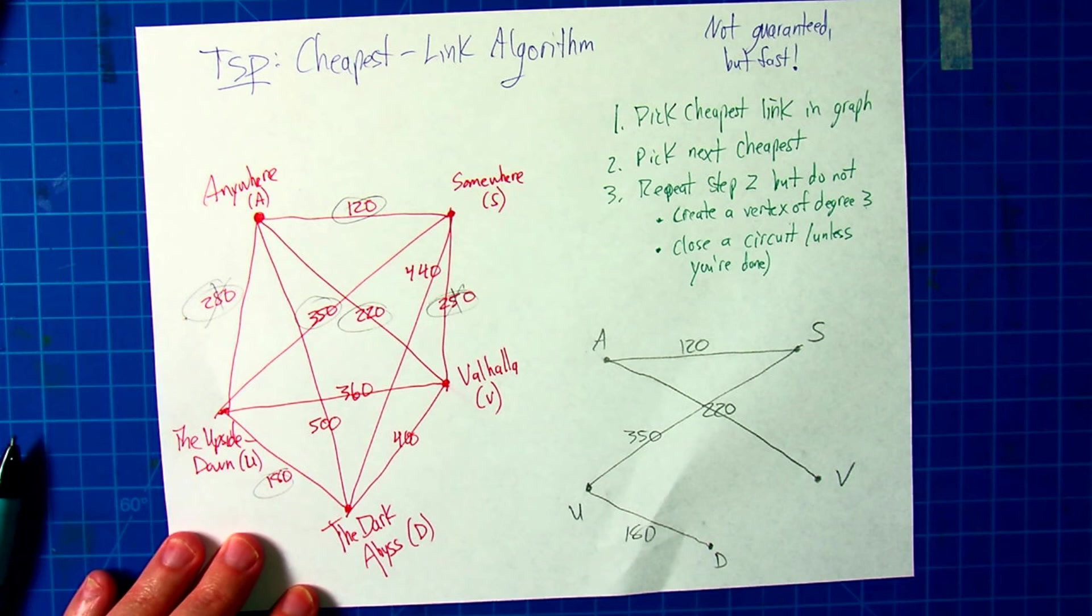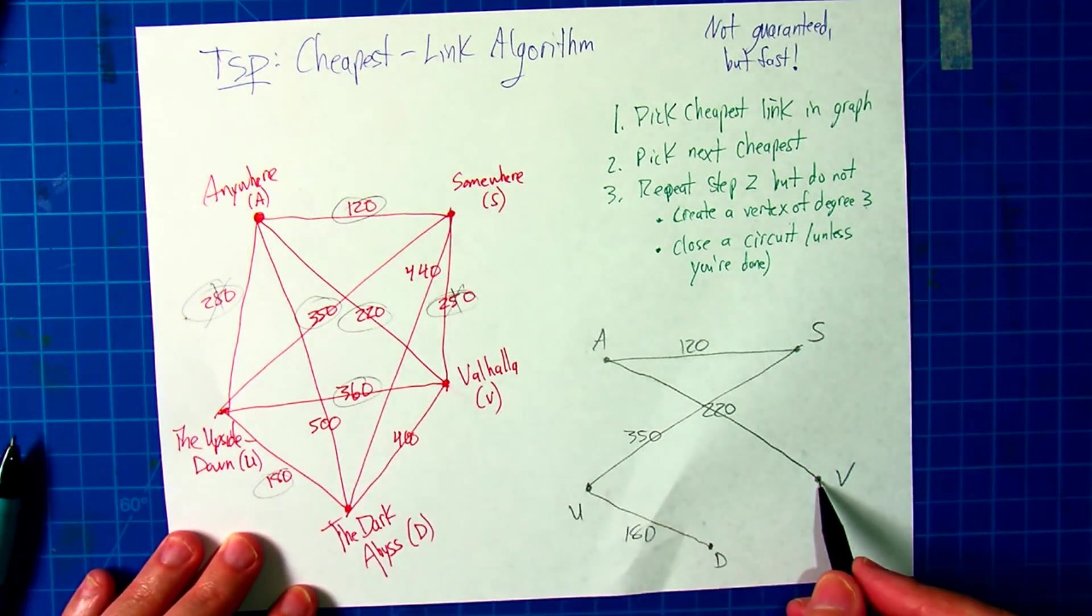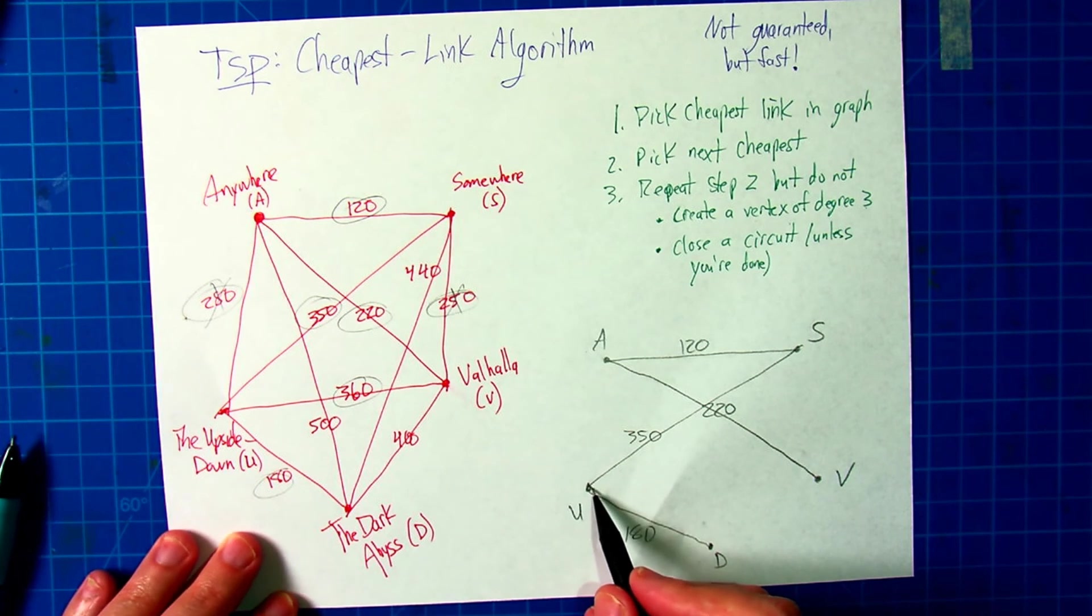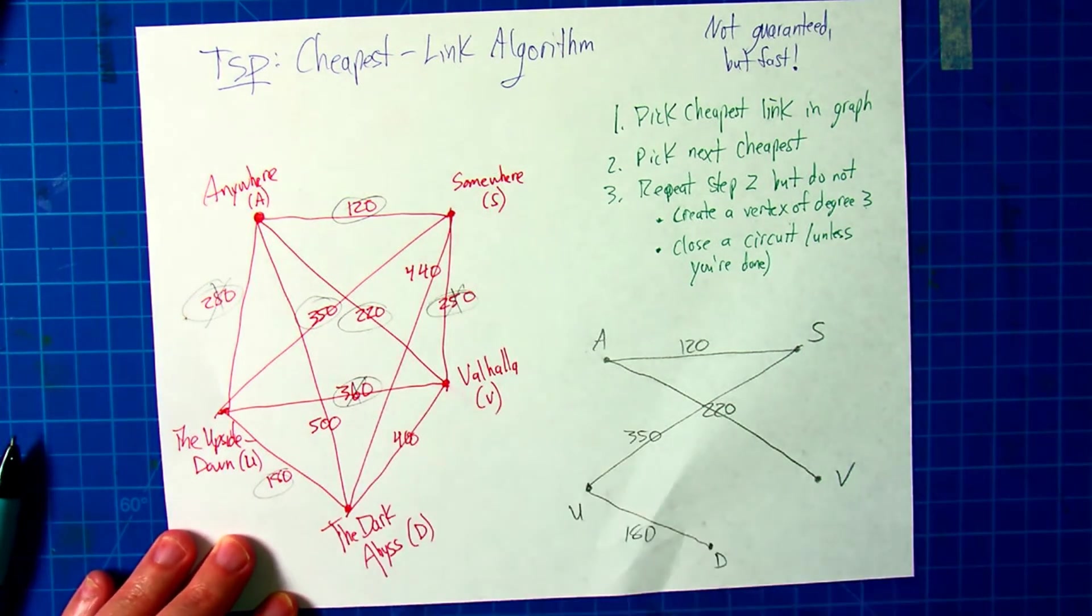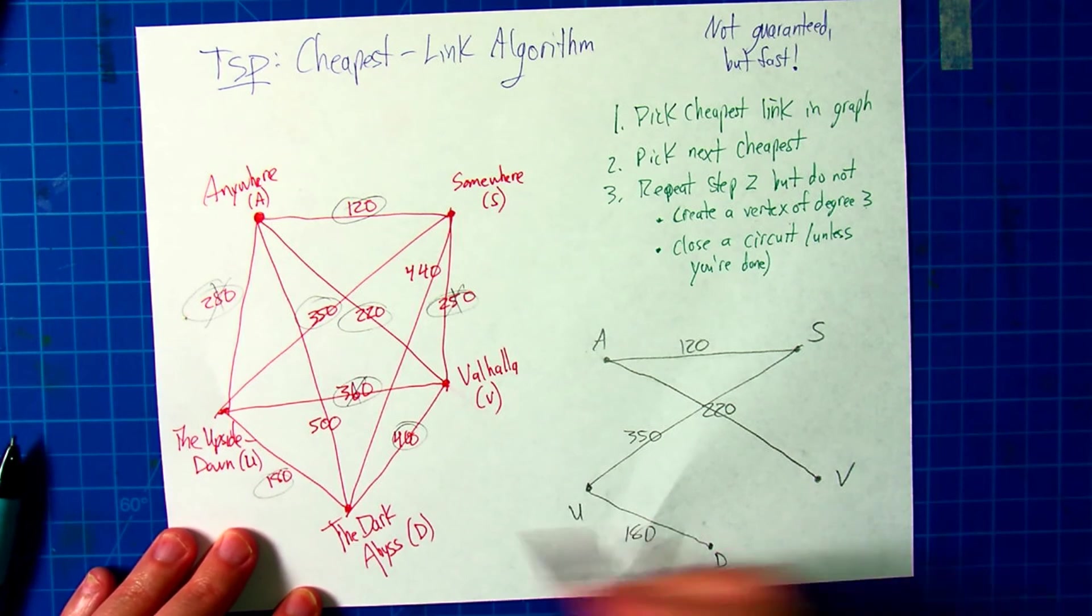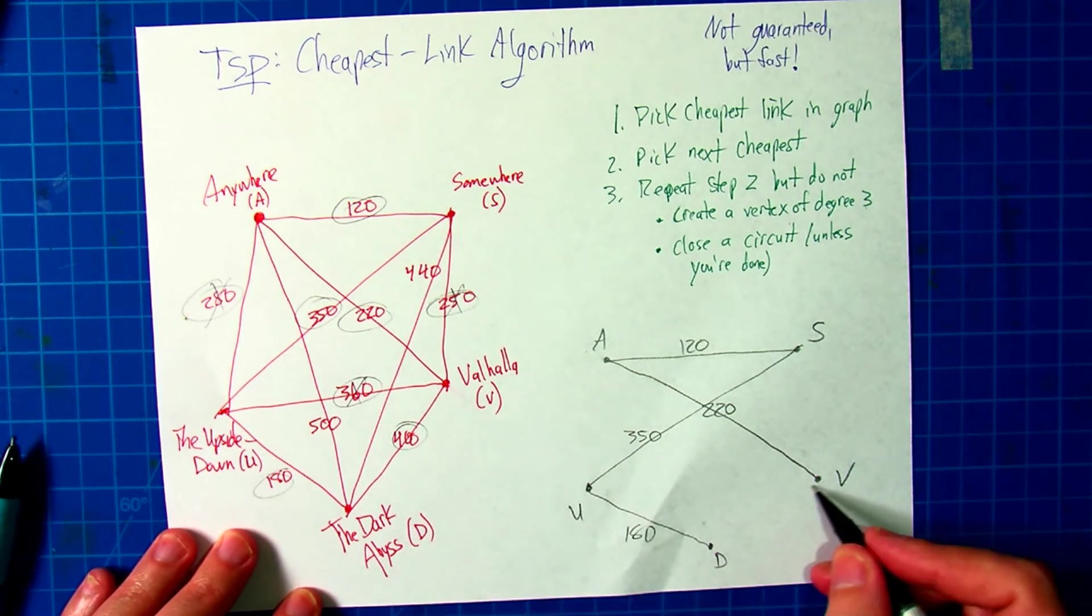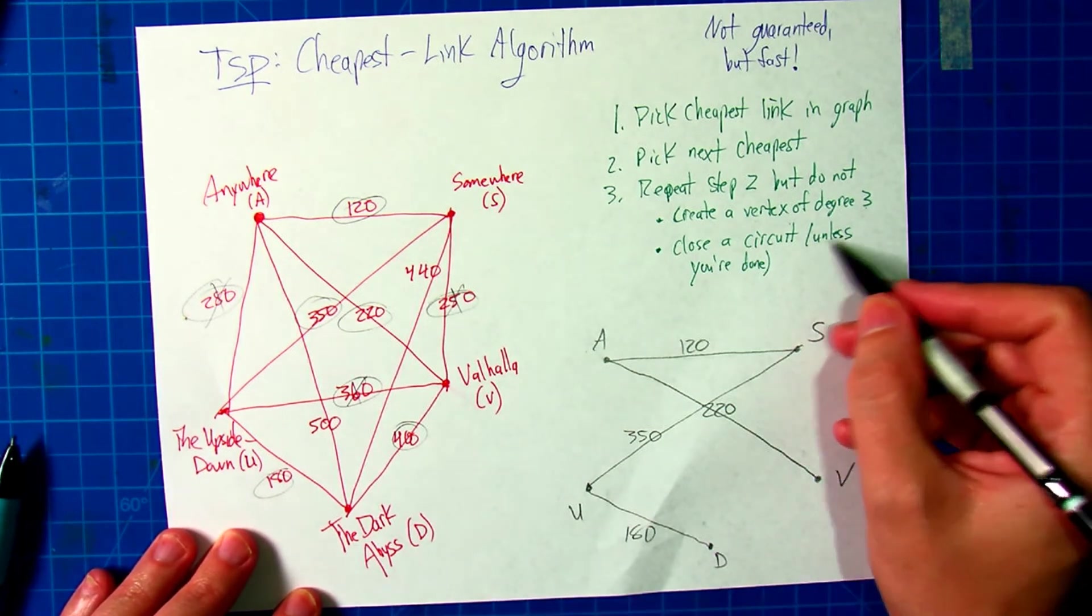Not very many options left, but keep going through them. 360, does that work? No, because if you go U to V, that is going to close the circuit and create a vertex of degree three, so 360 is out. How about the 400? 400 looks like it'll work. Going from D to V is going to close the circuit, but that's okay because we're done.